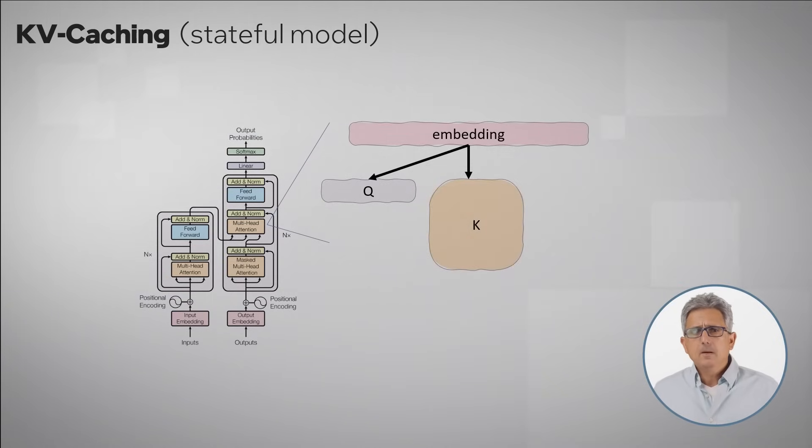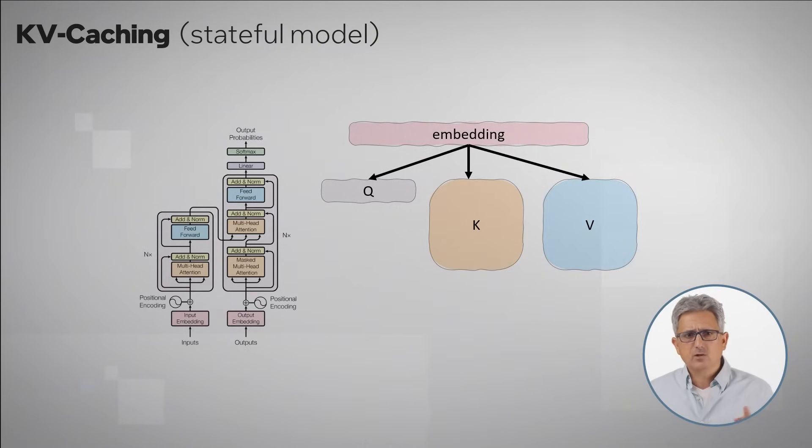We also multiply the embedding by another matrix to create K, key, which is the matrix that represents the previous context, the previous tokens that the model should attend to and the same for V, but it's applied after the softmax layer.